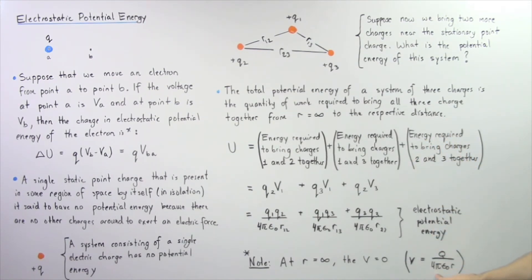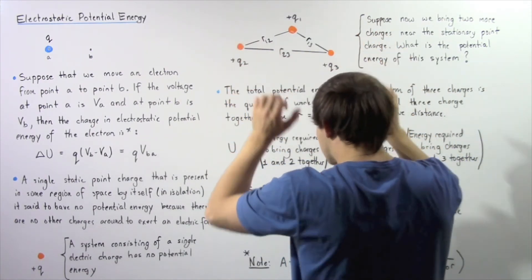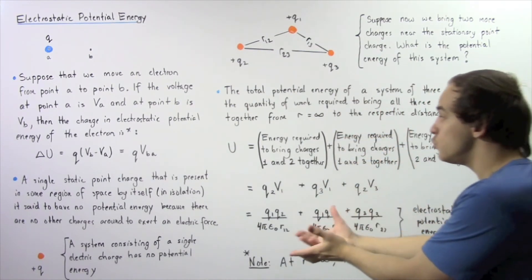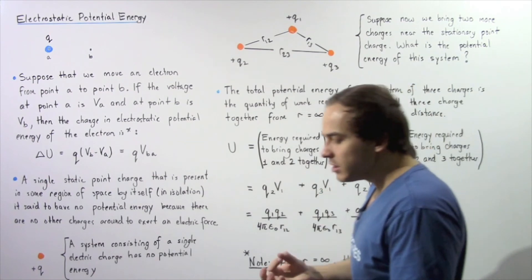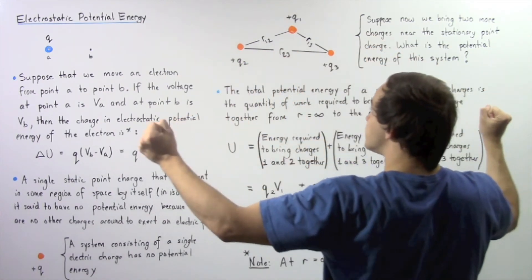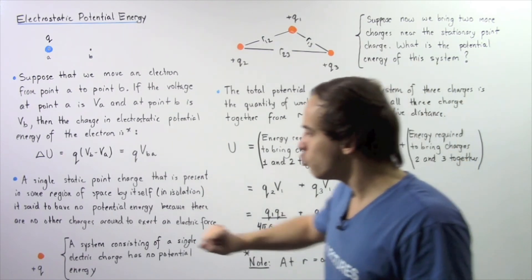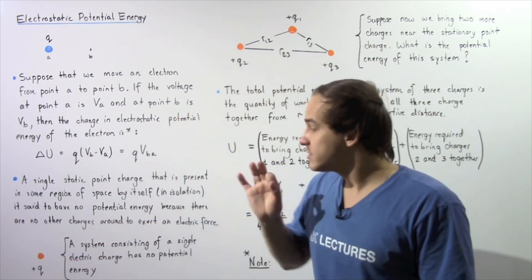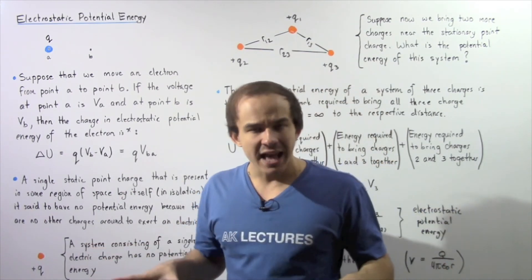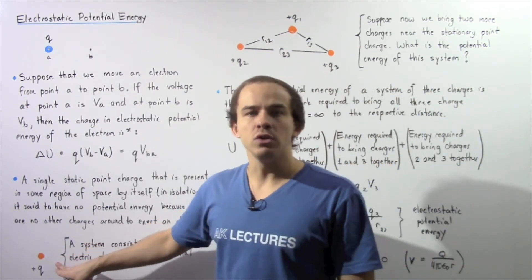V3 is Q3 divided by 4π epsilon-naught multiplied by R23. This gives the total electrostatic potential energy of our system of three electric charges. We arrived at this equation by realizing that the total work required to bring all these charges together equals the total electrostatic potential energy, since a single isolated static point charge has an electrostatic potential energy equal to zero.